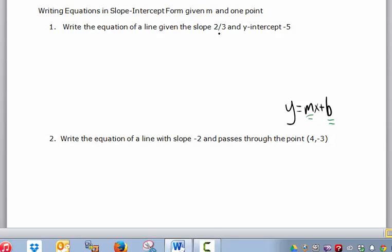So here's the good news, we're given m. So I'm halfway done. y equals two-thirds x plus b. And in this example, in the first one, we got lucky, we got both of them. So I don't actually have to do any work here. y equals two-thirds x minus five.